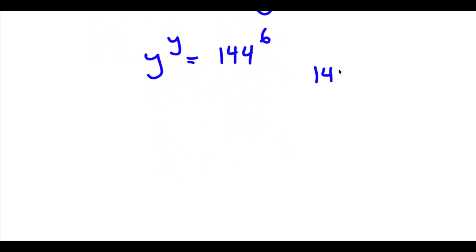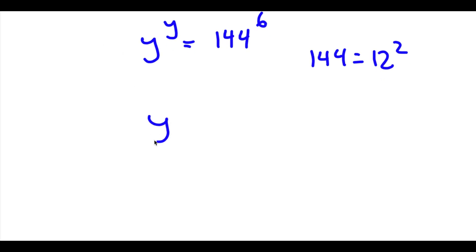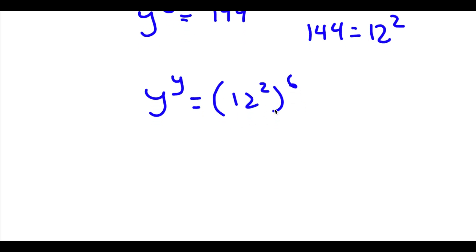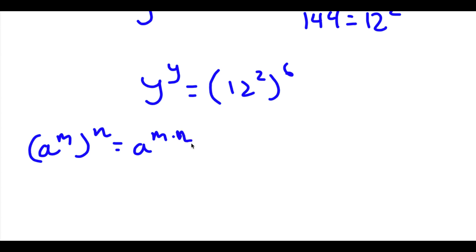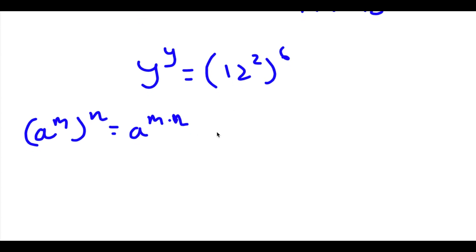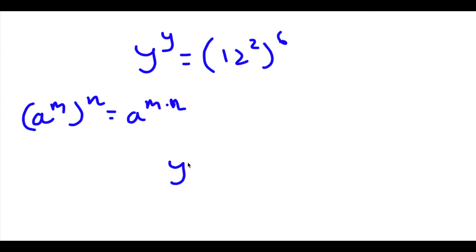Now 144 is the same thing as 12 to the power of 2, so now I have y to the power of y is equal to 12 to the power of 2, to the power of 6. Using the rule a to the power of m to the power of n equals a to the power of m times n, we get 12 to the power of 2 times 6, which is simply 12 to the power of 12.